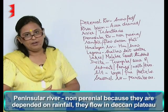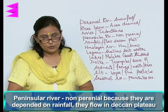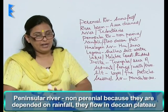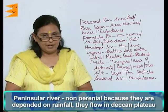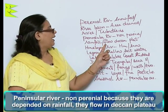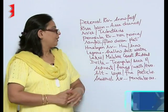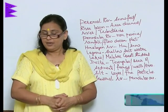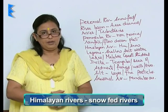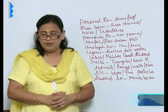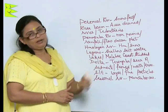Next is peninsular rivers. The peninsular rivers are generally non-perennial — they do not have sufficient water throughout the year because they are dependent on rainfall, and they generally flow in the Deccan Plateau of India. Next are the Himalayan rivers — again mighty, big rivers with lots of water, snow-fed rivers, and there is never a scarcity of water in these Himalayan rivers.